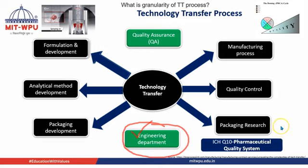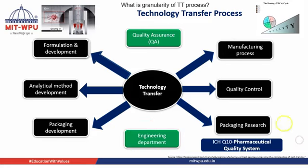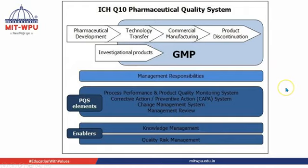Moving to the ICH Q10 guidelines: this talks about GMP — how we can transfer pharmaceutical developments from the R&D lab through scale-up to the manufacturing site where we can develop the products.